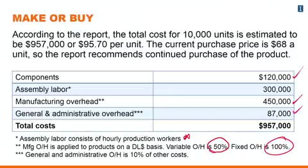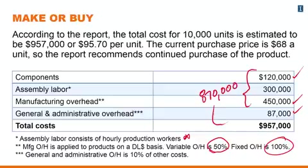General and administrative overhead is calculated as 10% of other costs — whatever costs the product is incurring, 10% of that amount is added on as a G&A overhead estimation. So the $120,000 for components, $300,000 for labor, and $450,000 for manufacturing overhead amounts to $870,000. Ten percent of that is added as G&A overhead, making these four line items total $957,000, which divided over the 10,000 units comes out to $95.70 per unit.